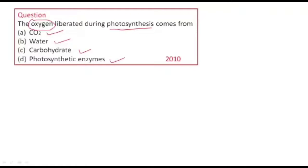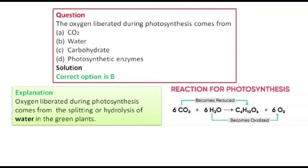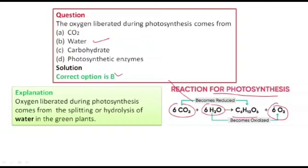The correct option for the source of oxygen released during photosynthesis is water. Here you can see a reaction where carbon dioxide and water, in the presence of sunlight, undergo photosynthesis to form glucose. The oxygen that is released comes from water — you can see that hydrogen comes from water and oxygen is also released from water.